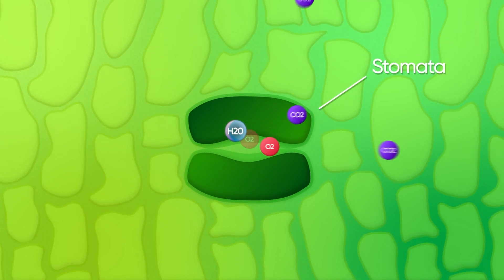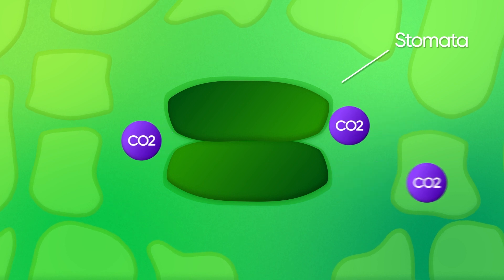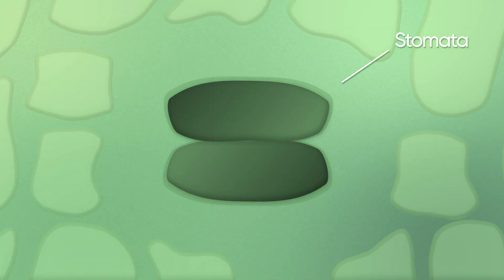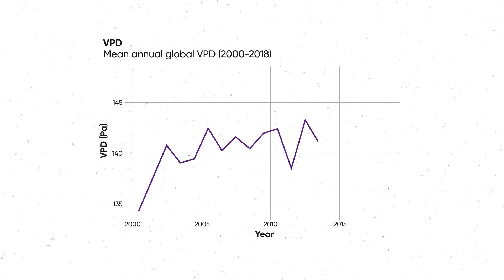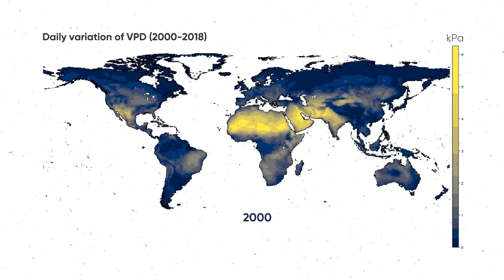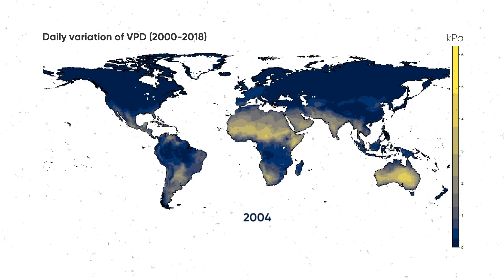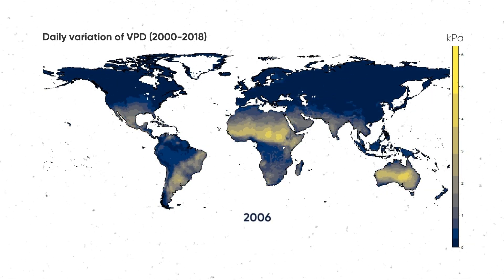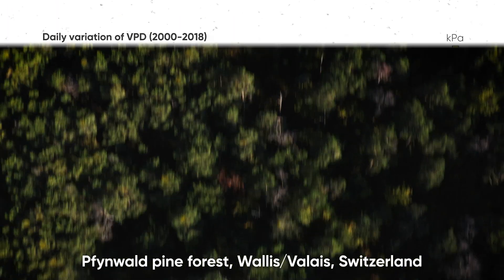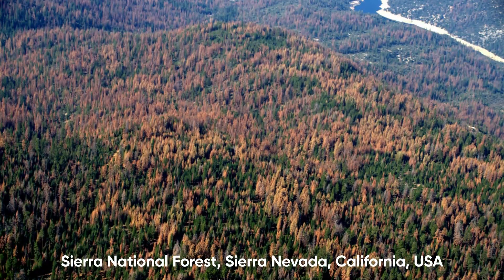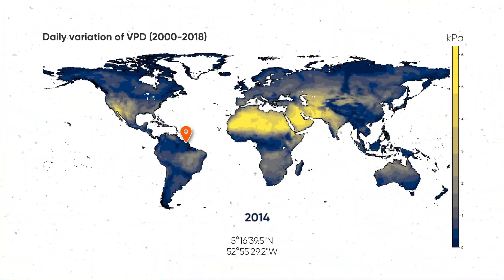In doing so, the plant cannot absorb CO2, which it needs to grow and survive. Over a longer period of time, the plant risks starvation and eventually death. A high VPD has a drying effect on plants. With global warming, VPD has increased and is expected to increase further. The amount of water vapor actually present in the atmosphere has not grown at the same rate as global warming. This is partly because evaporation from the oceans has been declining over the last 20 years, for reasons that are still unclear. Therefore, in the future, trees might suffer from atmospheric drought stress just because temperatures are going up, even in humid tropical climates.